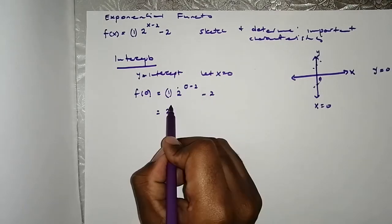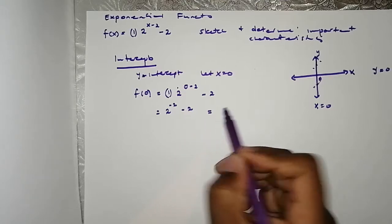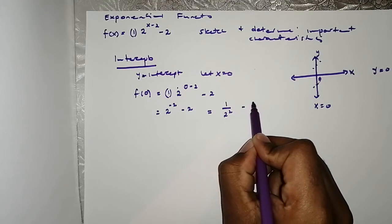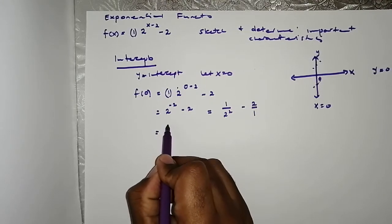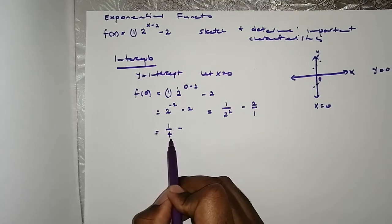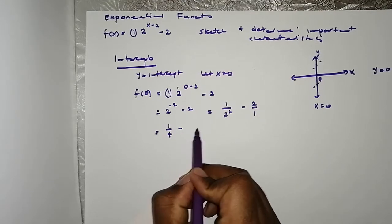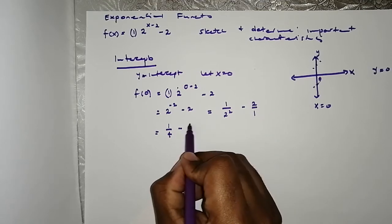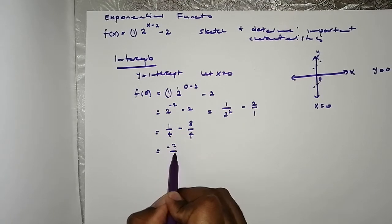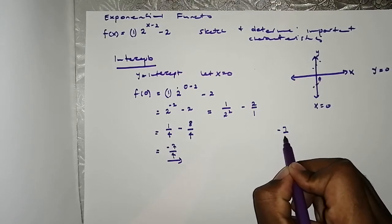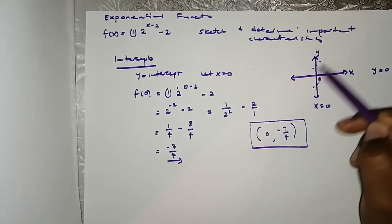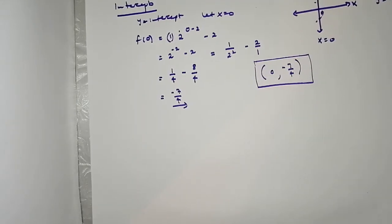So 2 to the (0 minus 2) is 2 to the negative 2, minus 2. That gives us 1 divided by 2 squared, minus 2, which is 1/4 minus 2. To subtract, we get a common denominator of 4, so it becomes 1 minus 8 over 4, which equals negative 7 over 4. So negative 7/4 is where the function cuts the y-axis.